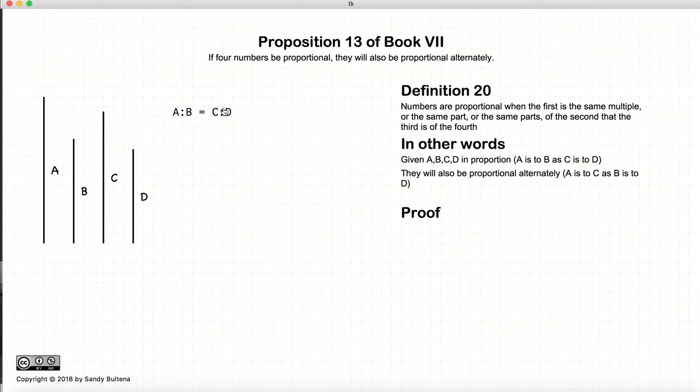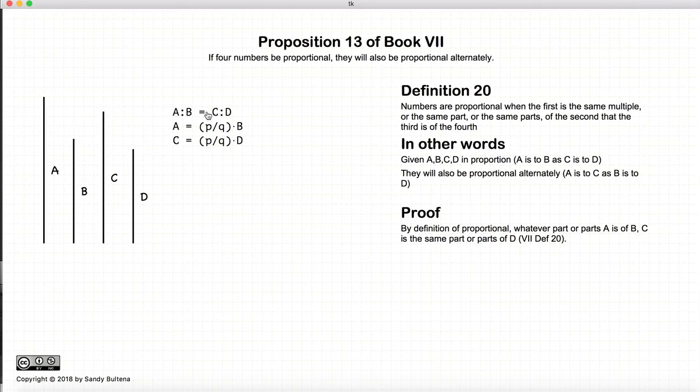To prove this, we're starting with four numbers that are in proportion. By definition, if these are in proportion, then A is the same fractions of B that C is of D.